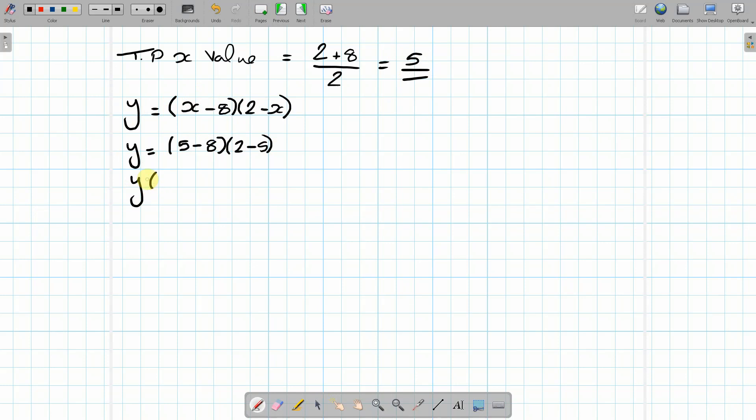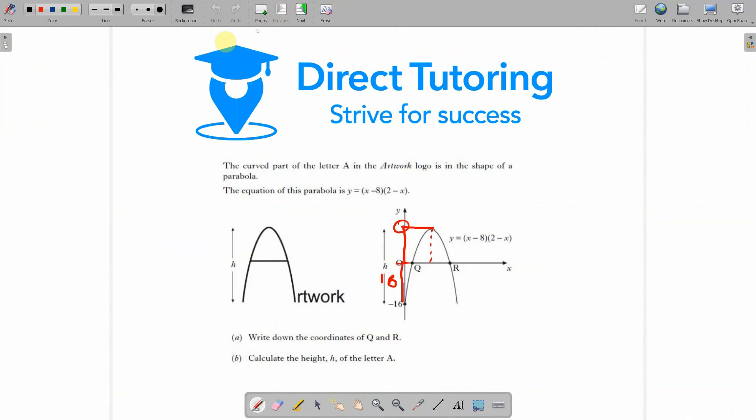5 minus 8 is minus 3. And 2 minus 5 is also minus 3. So minus 3 times minus 3 is positive 9. So that means that this value here is 9.